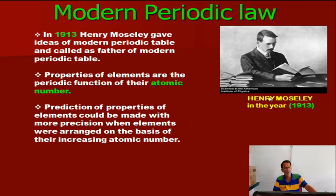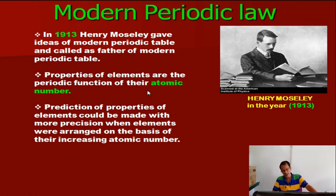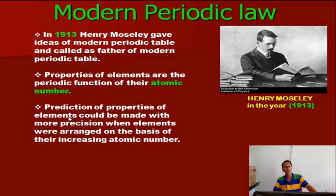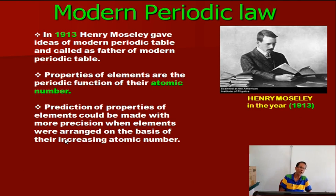These periodic laws were not fully accepted by modern scientists. Henry Moseley considered that atomic number is the periodic property of elements. According to Moseley's Modern Periodic Law, the physical and chemical properties of elements are the periodic function of their atomic number, not atomic mass. He arranged the elements in increasing order of atomic number, enabling more precise prediction of properties.